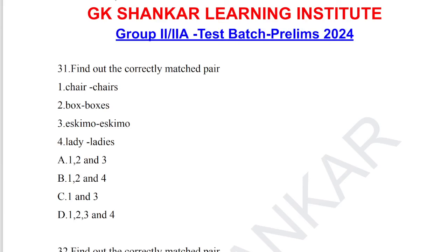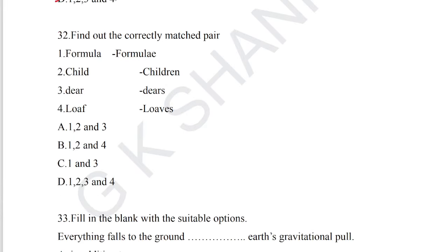Question number 31: find out the correctly matched pair — plural forms. Options include chair/chairs, box/boxes, eskimo/eskimos — note that eskimo has two valid plural forms. Option D is the answer for question number 31, as all of one, two, three, and four are correctly matched.